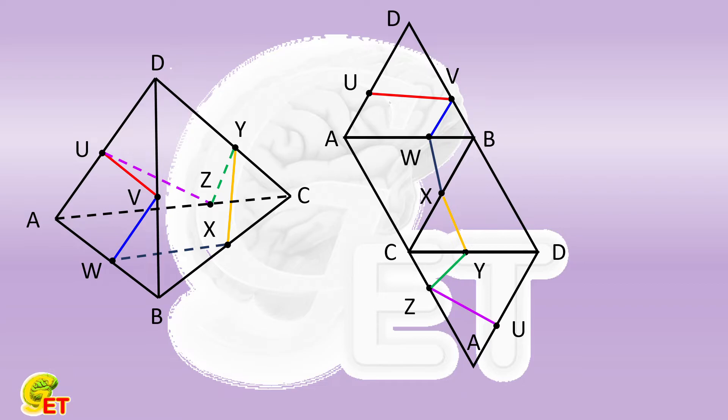So we first use BD as the axis of symmetry to plot the symmetric figure of the triangle ABD. And find the symmetry point of U, denote it as P.